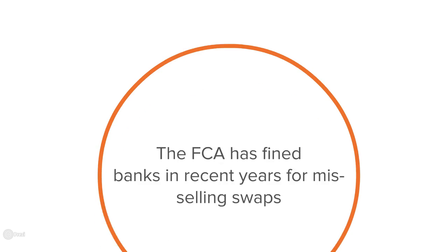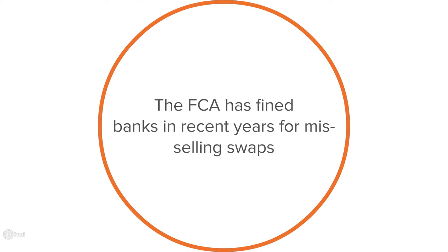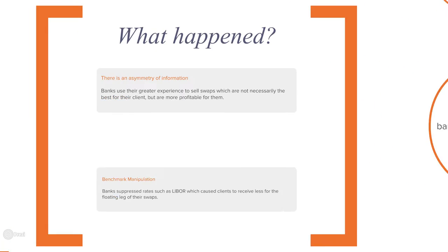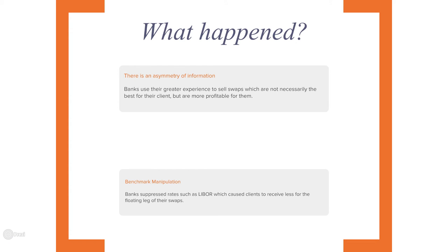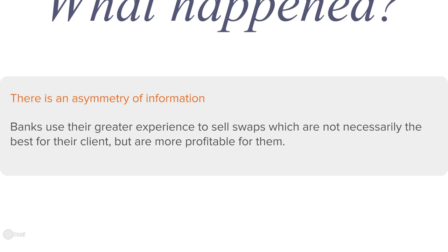The FCA investigation into swap mis-selling has shown how bank employees were pressured into selling more derivatives to their clients. In practice, what types of wrong behavior have been exposed? Firstly, the swap negotiation process is characterized by an asymmetry of information. Since banks have more knowledge of swaps than their clients, they are able to skew the process in their favor.